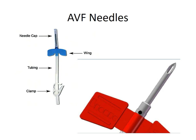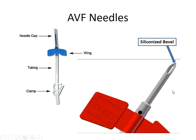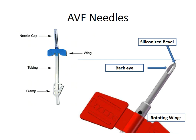The blood circuit starts from the arteriovenous fistula needles. The AV fistula needle has a needle, wings, tube, and a clamp. The needle has a siliconized bevel and a back eye, with rotating wings. These rotating wings can help in repositioning of the needle during dialysis.